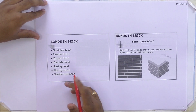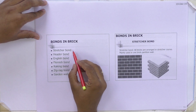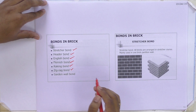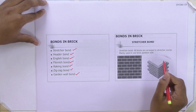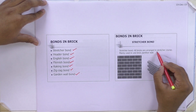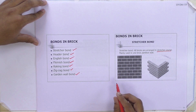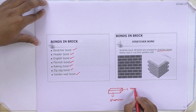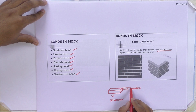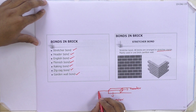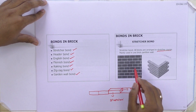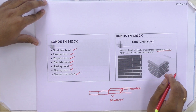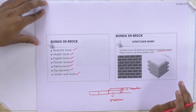In brick masonry we have different types of bonds. First one is stretcher bond — all bricks are arranged in stretcher course, used in one-brick partition walls. We are not constructing this for two-brick main walls; it should be a partition wall inside the structure and should not carry any load.